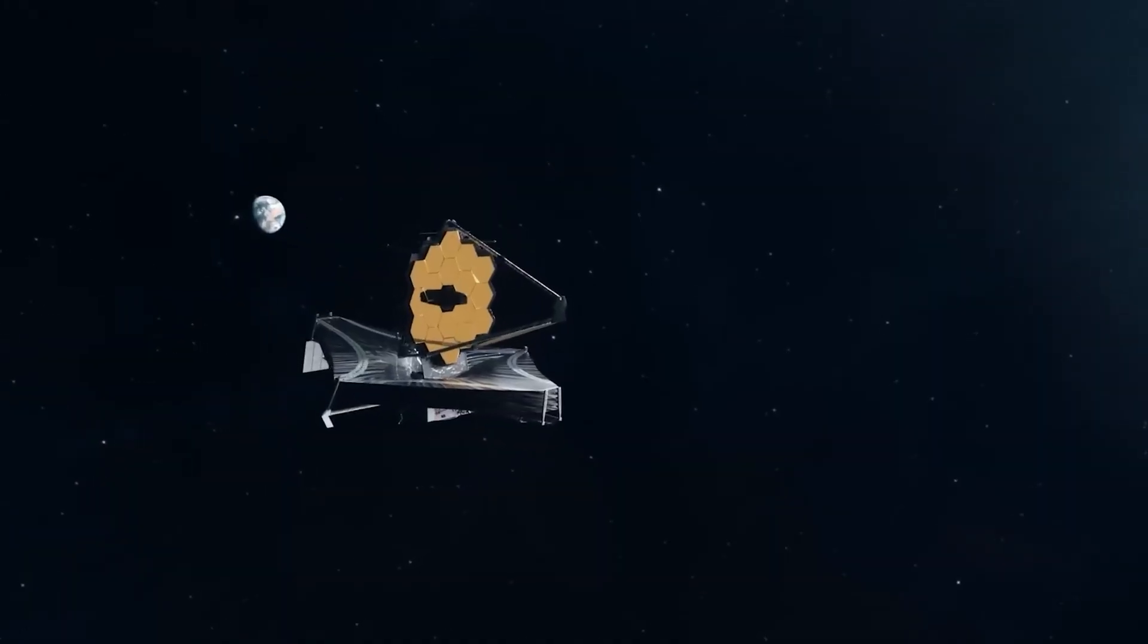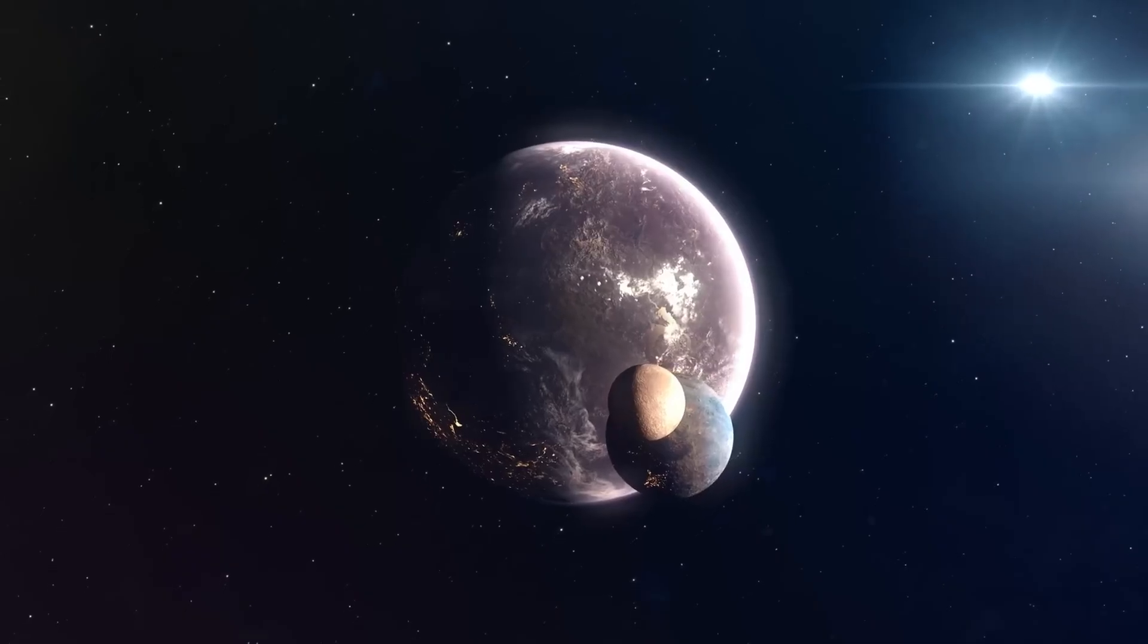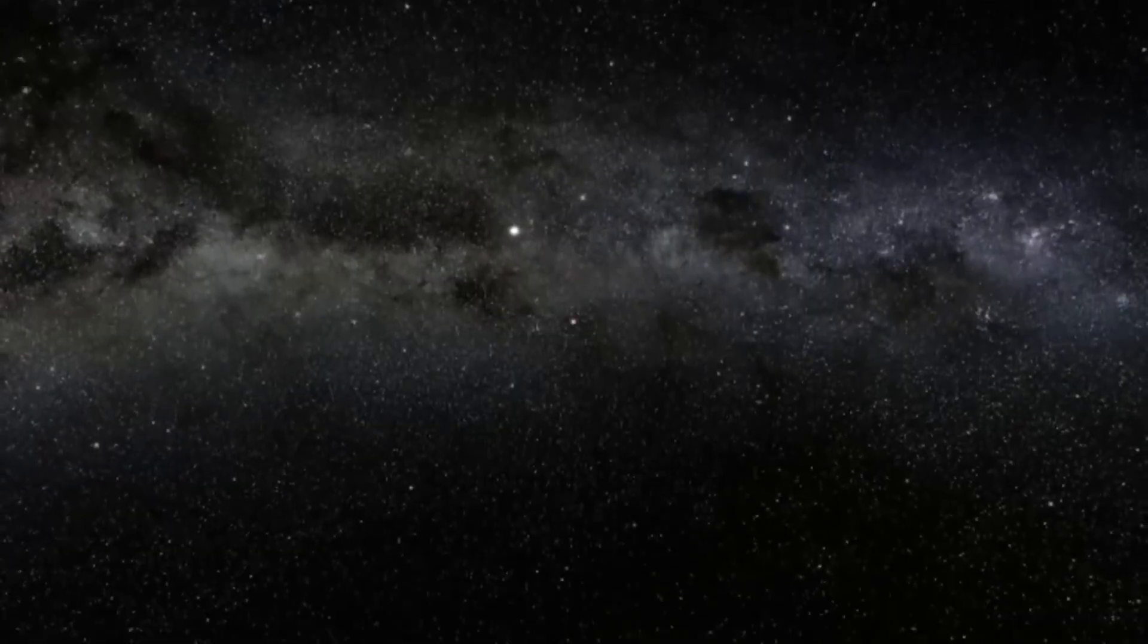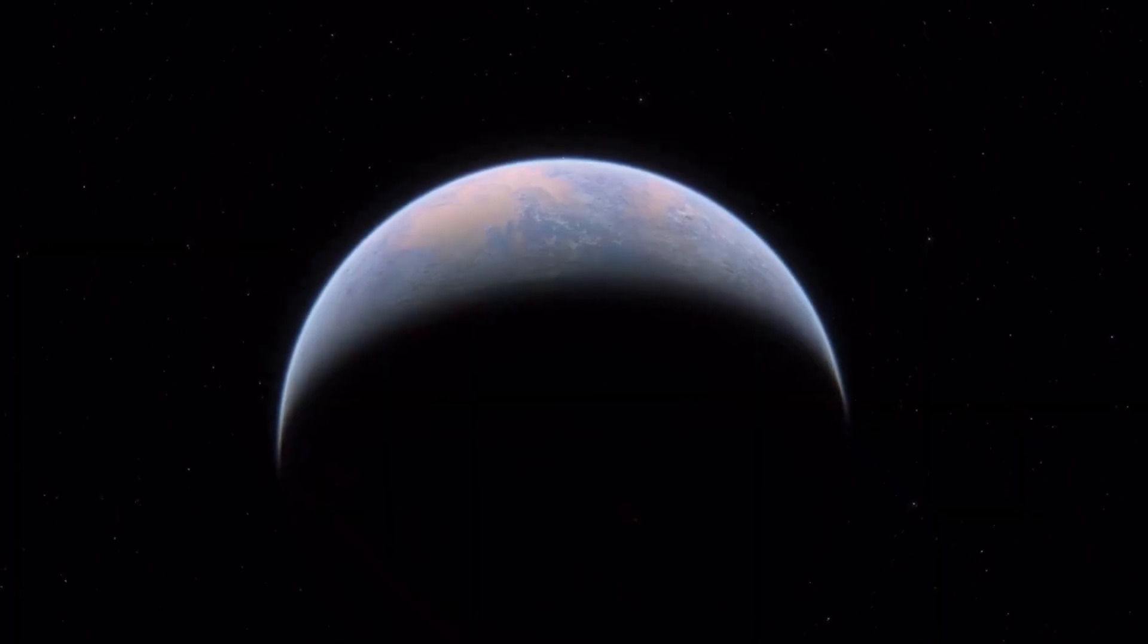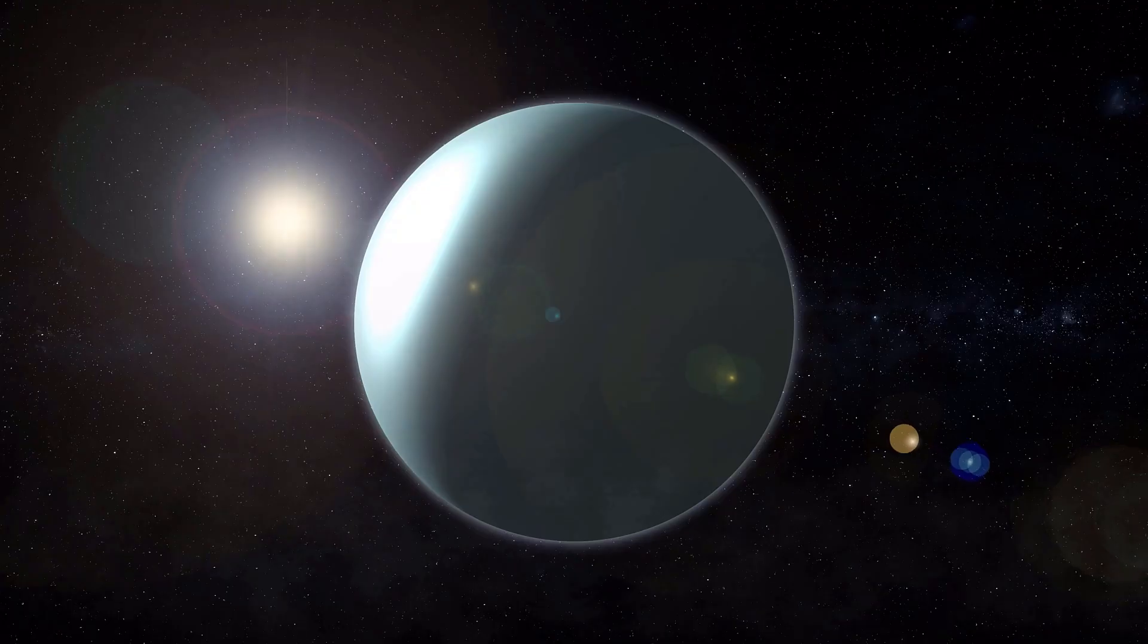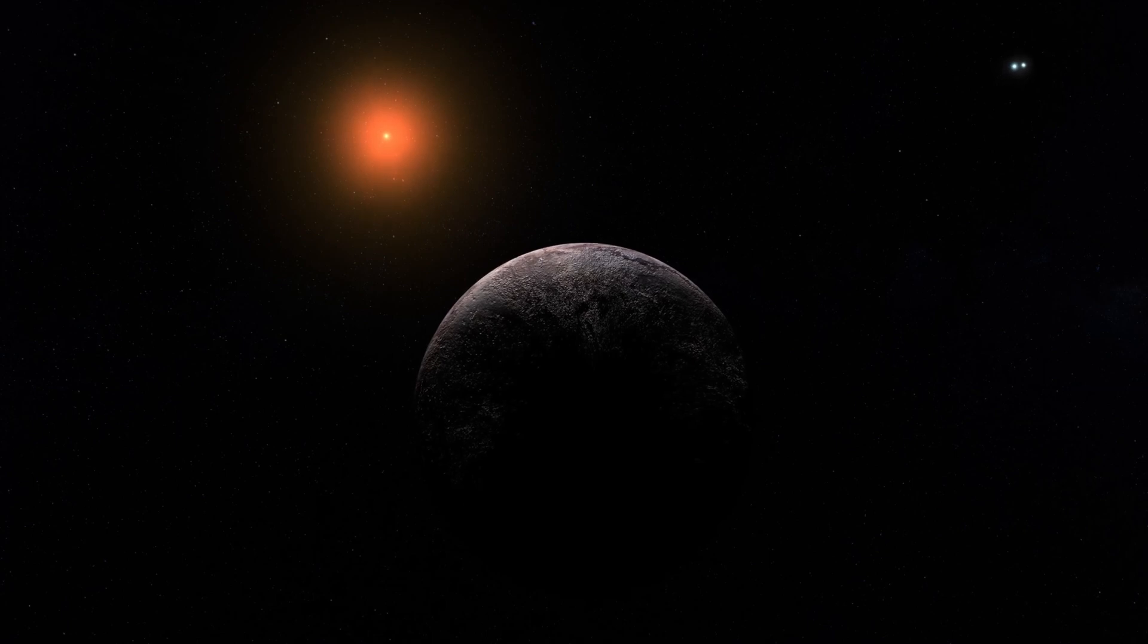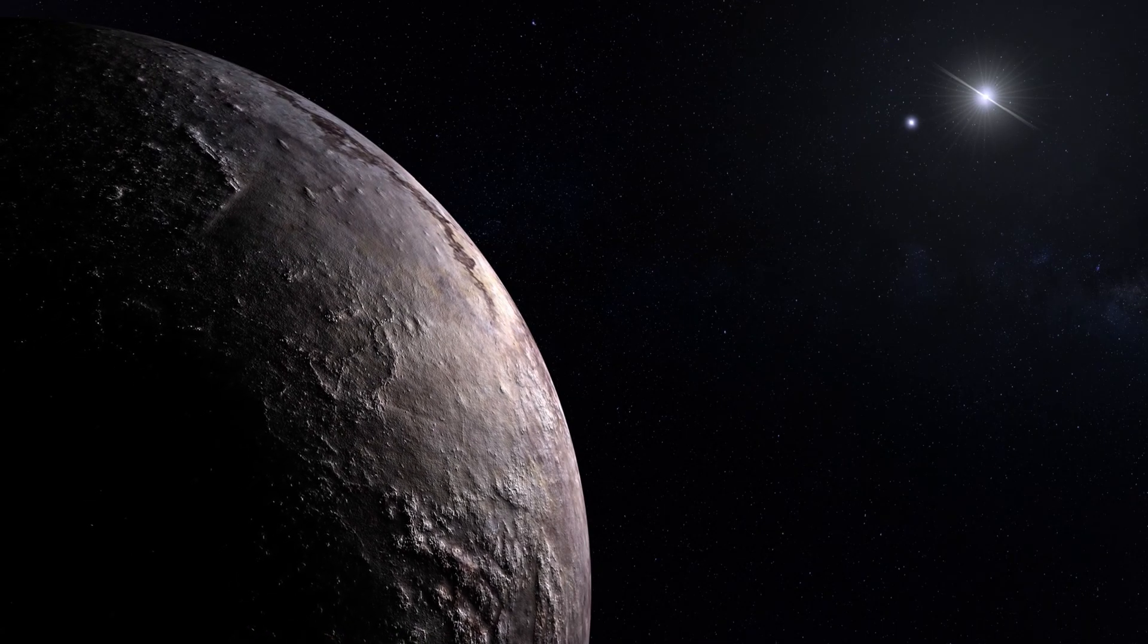Exoplanets, or planets outside our solar system, are turning out to be wildly diverse. Some are scorching hot, some are frozen, and a few might even be habitable. But how do they form, and what makes them so different from each other? It's a giant guessing game. The idea of multiverses, other universes existing alongside ours, is tantalizing and frustrating. If they're real, how could we ever prove it? It's like trying to see outside a box you're stuck inside.